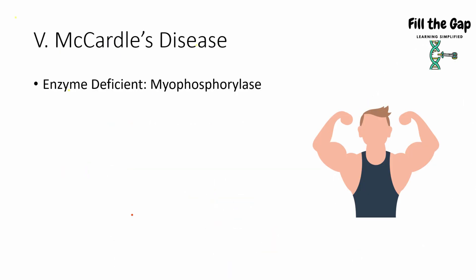Next is McArdle's disease. The enzyme deficient is myophosphorylase — that's easy because McArdle starts with M and myophosphorylase starts with M. If you draw the letter M, the middle part looks like the letter V or the Roman numeral 5, helping you remember this is the fifth disease.